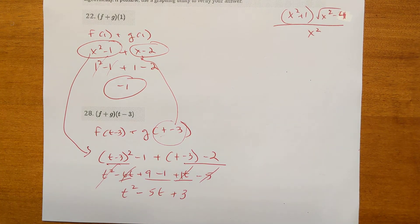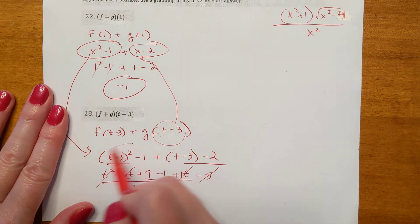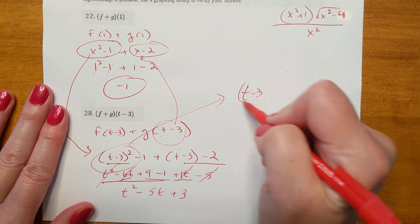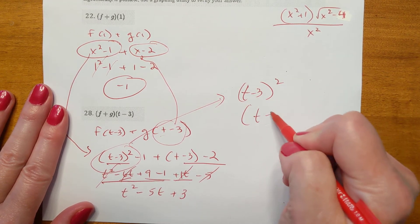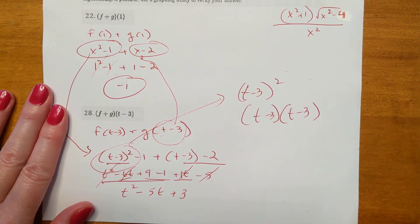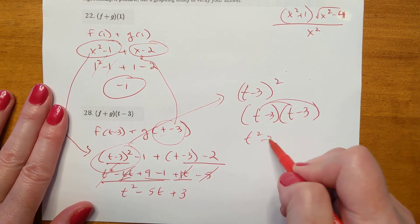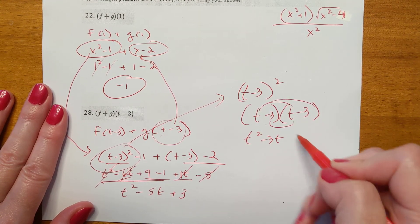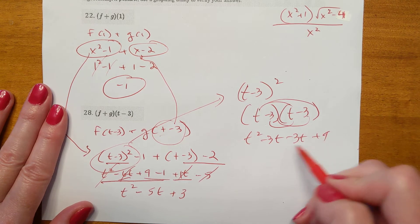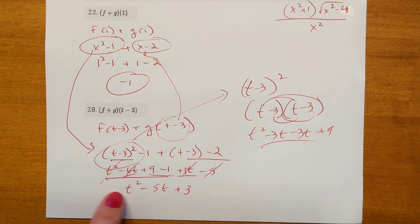Just to explain where that came from — t minus 3 squared means you foil t minus 3 times t minus 3, using first, outer, inner, last: t squared minus 3t minus 3t plus 9. That gives you the minus 6t in the middle.